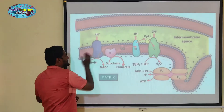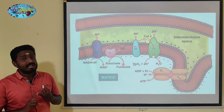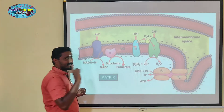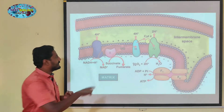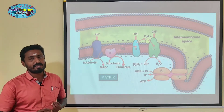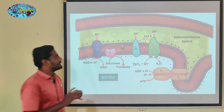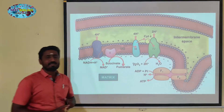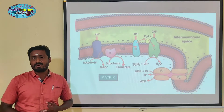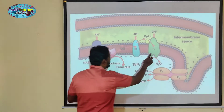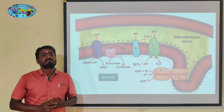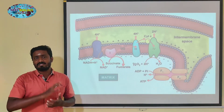The first complex is NADH Dehydrogenase Complex. Complex 2 is Succinic Dehydrogenase Complex. The third complex is Cytochrome BC1 Complex. What is Cytochrome C? The fourth is the Cytochrome C Oxidase Complex.